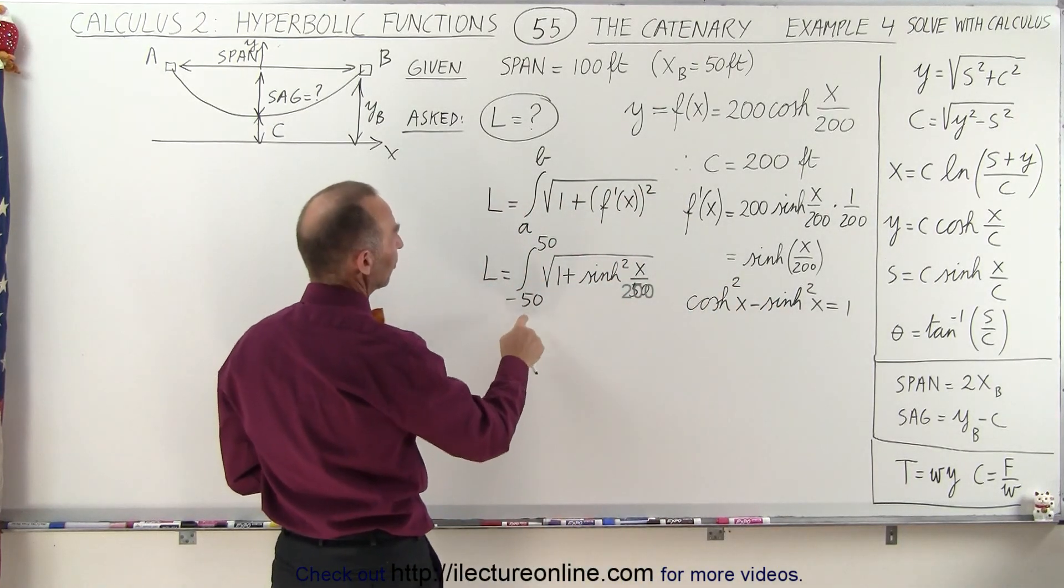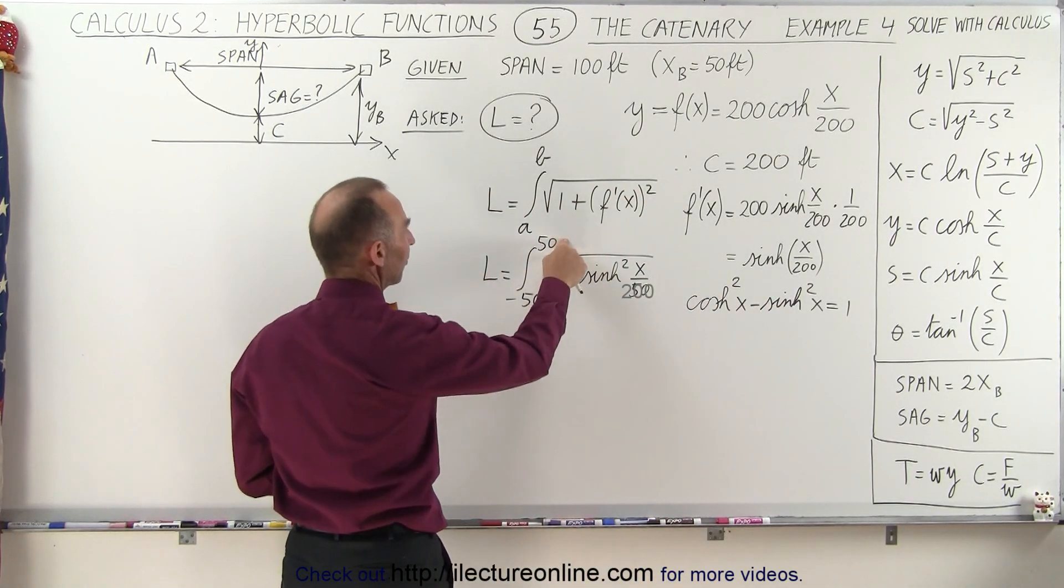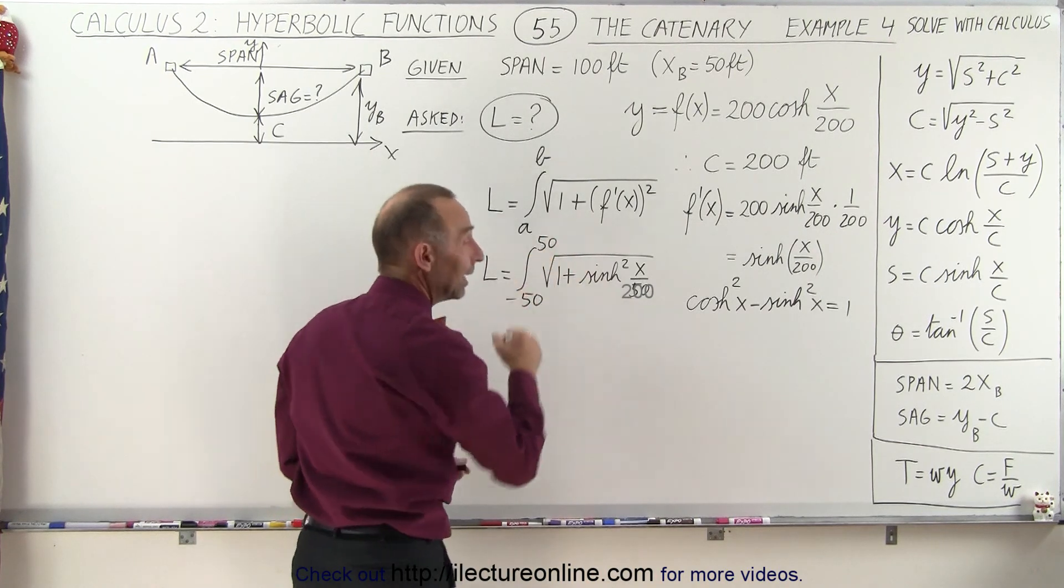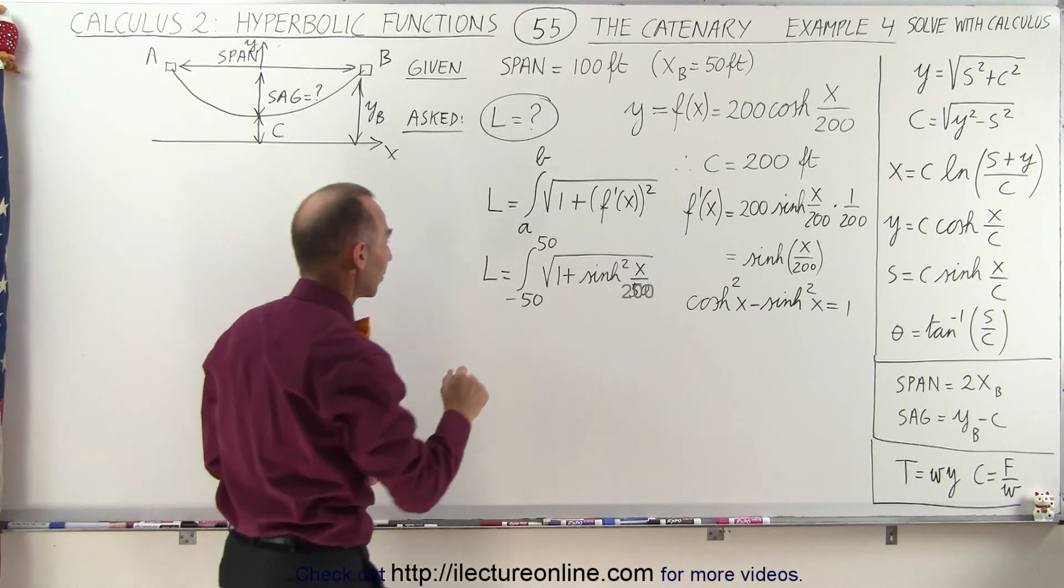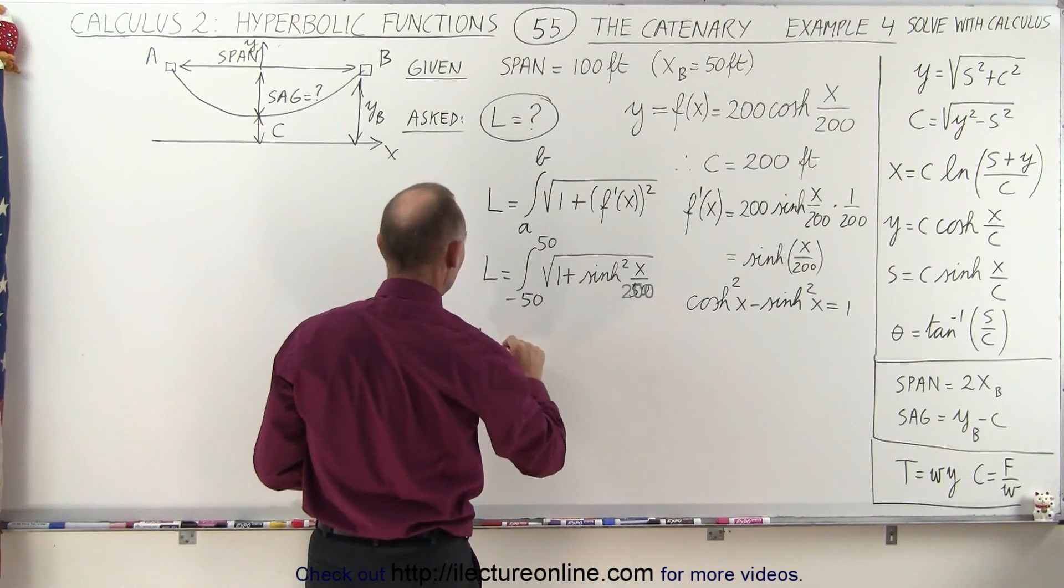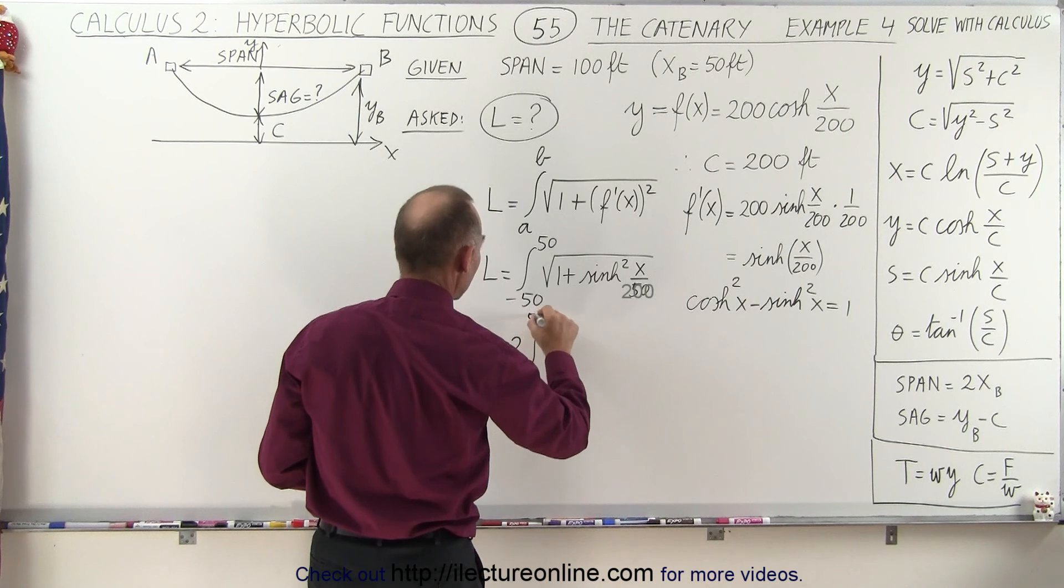Instead of integrating from minus 50 to 50, we can go from 0 to 50 and simply double the integral because it's symmetric on both sides. So L is equal to 2 times the integral from 0 to 50.